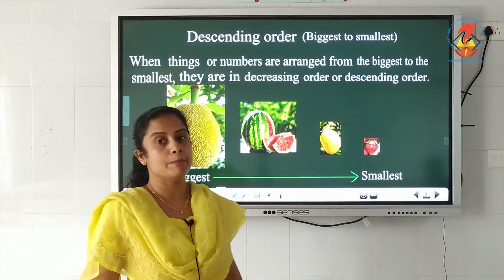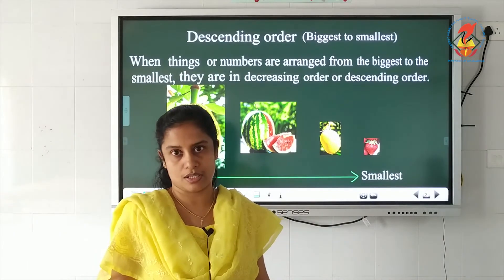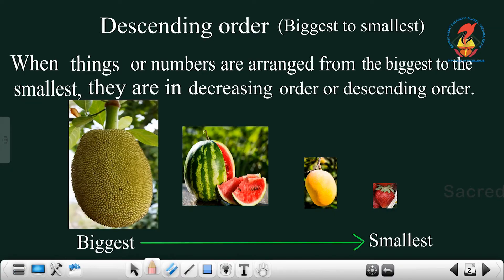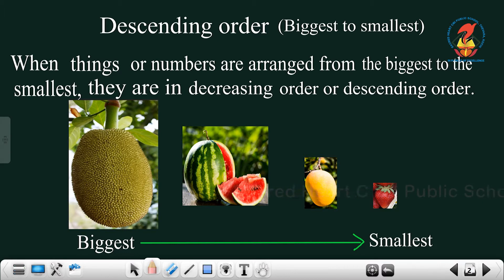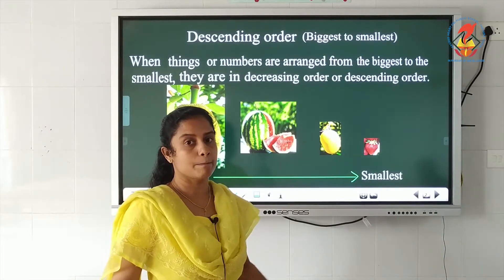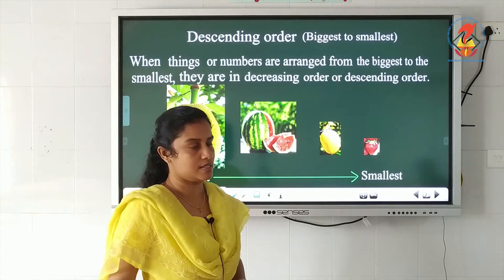So children, when things or numbers are arranged from the biggest to the smallest, they are in decreasing order or descending order. Descending order means biggest to smallest.